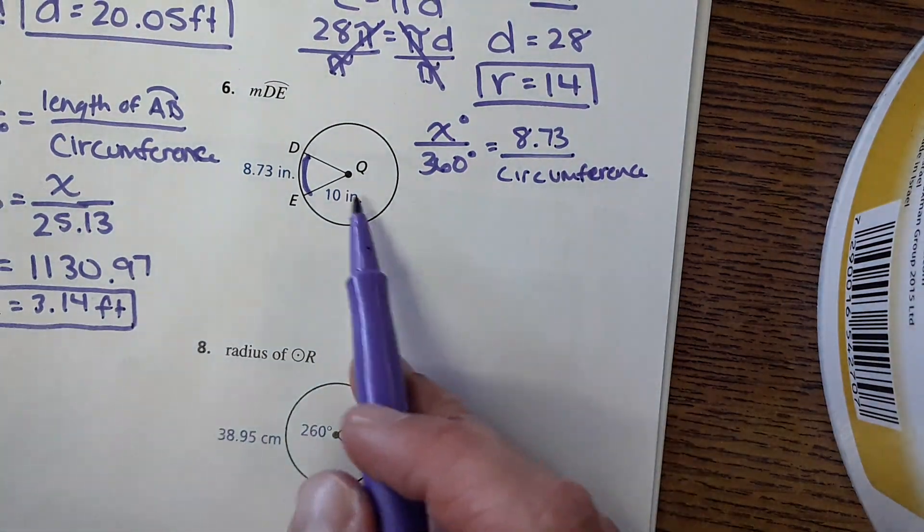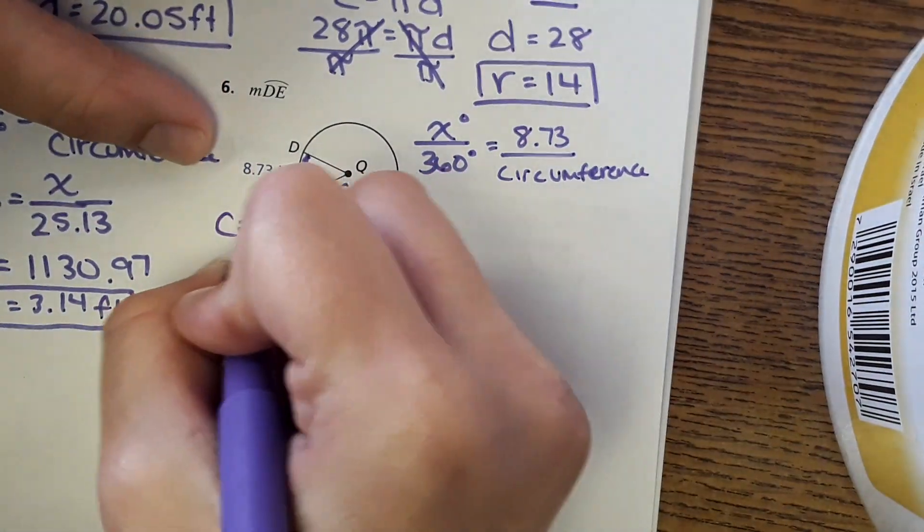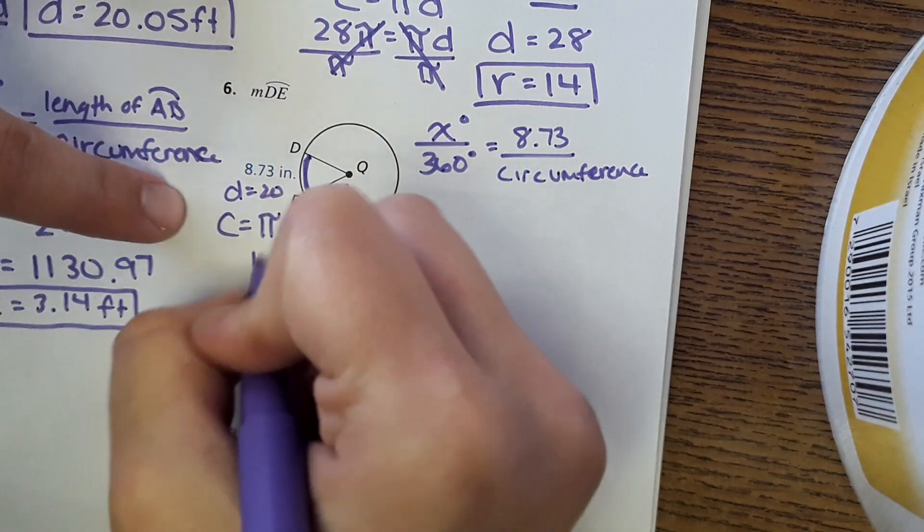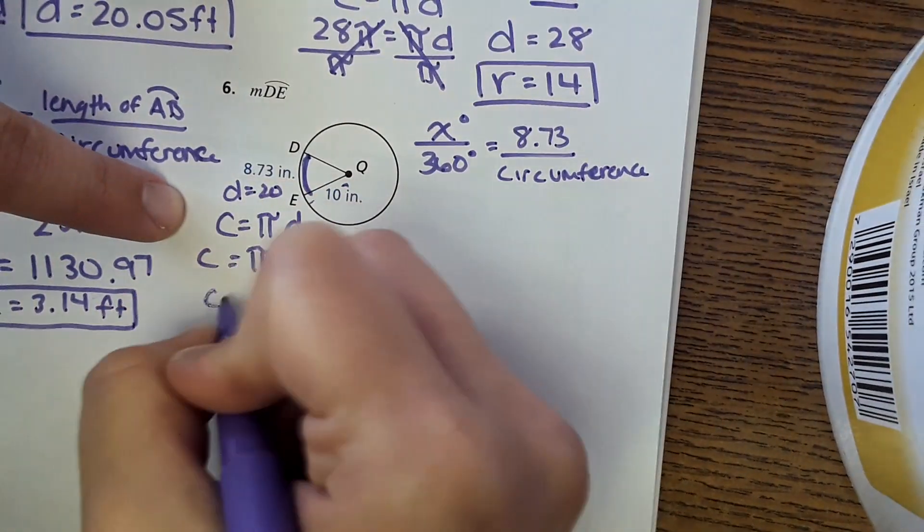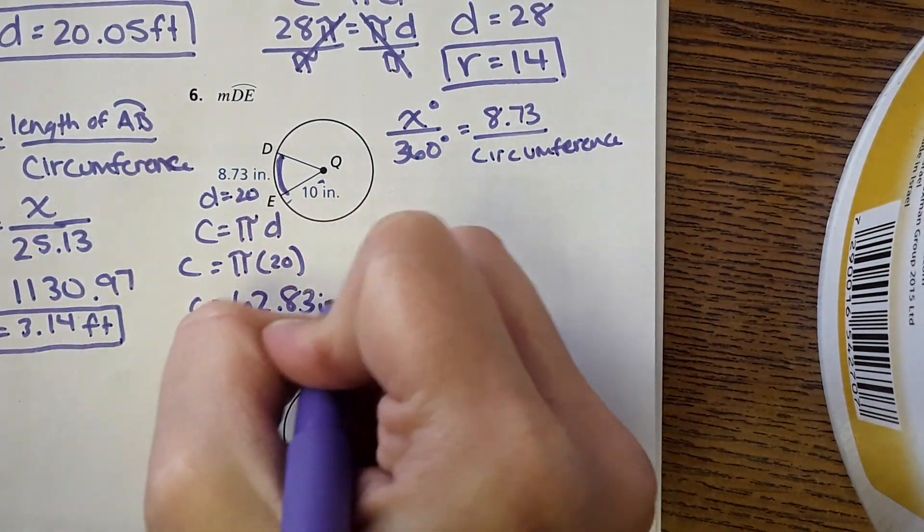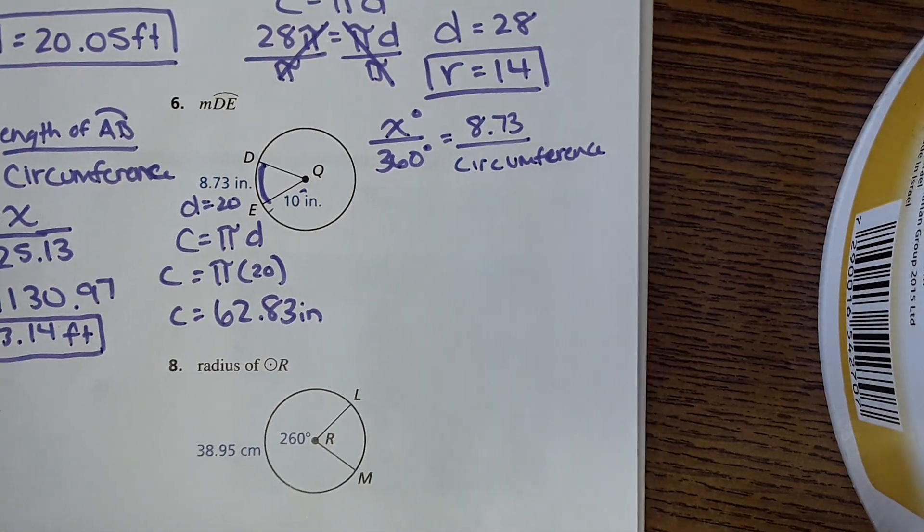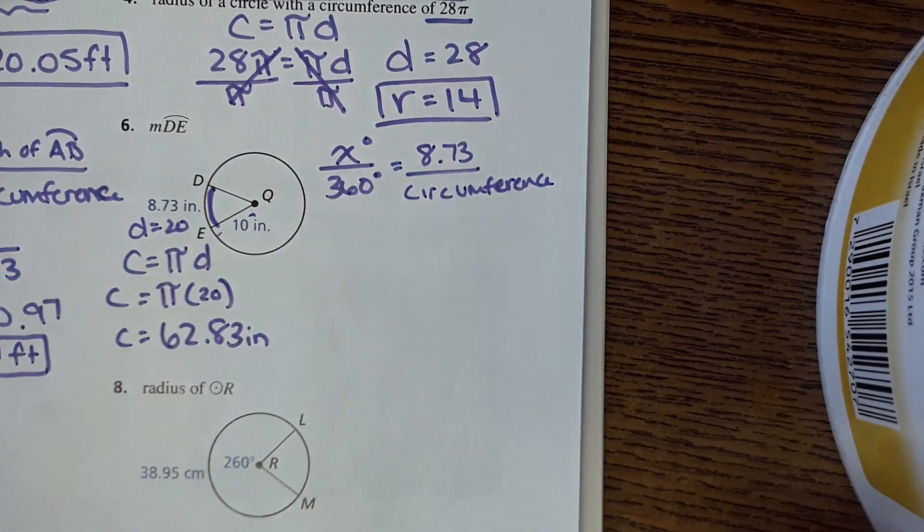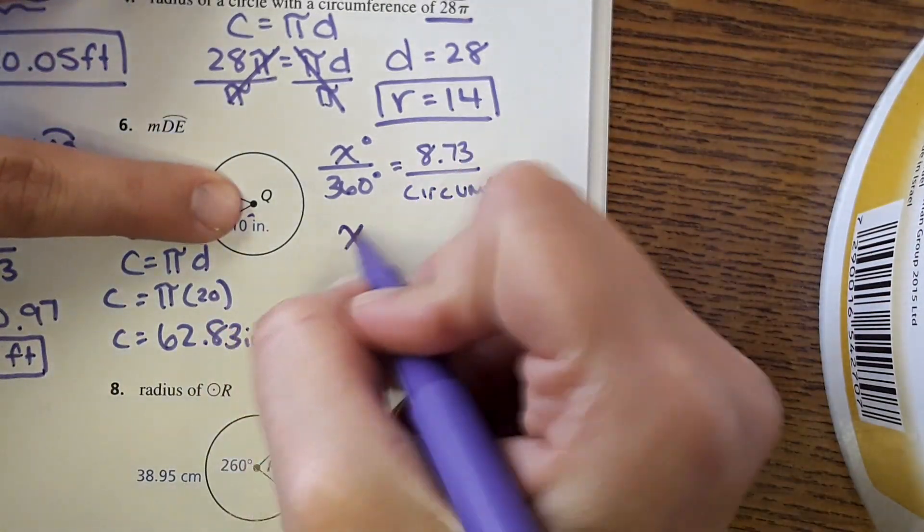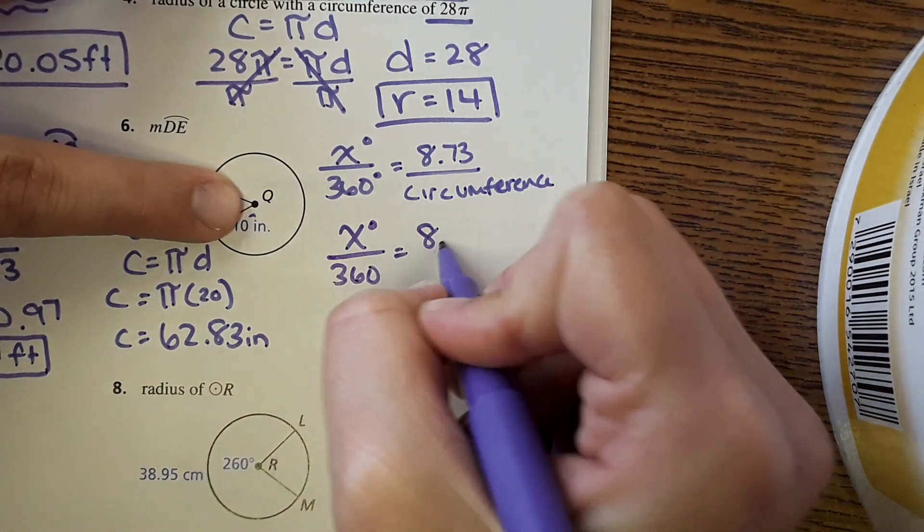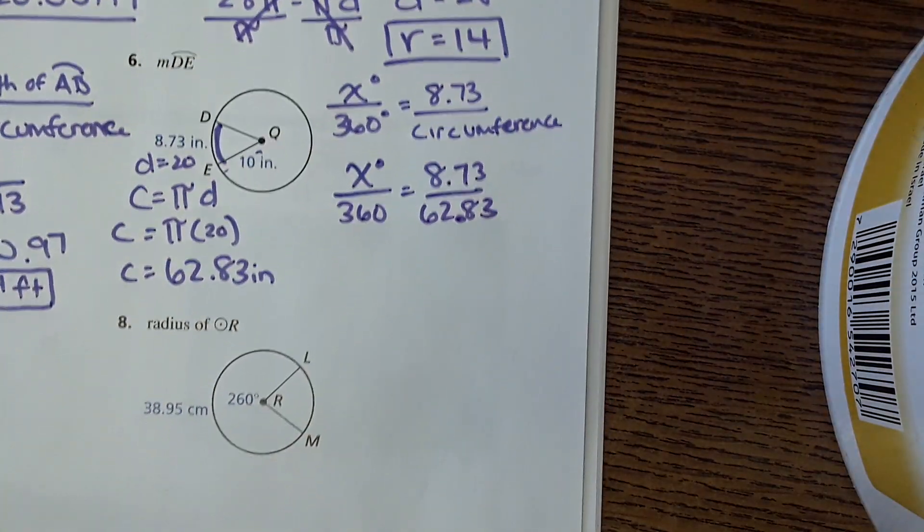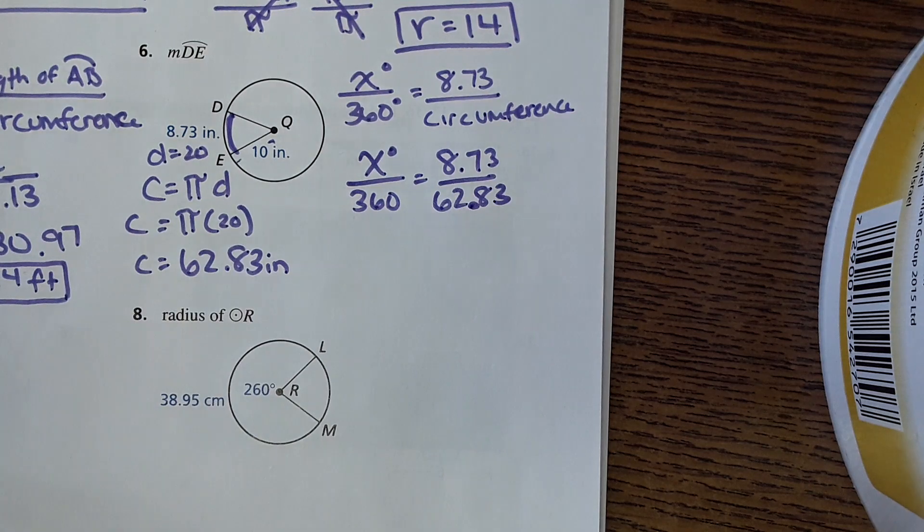So we have to solve for the circumference, they gave us radius. Circumference equals pi times diameter, the radius is 10 so the diameter will be 20. Pi times 20. And then once we have circumference we can plug it into this equation to be x degrees over 360 equals eight point seven three over sixty-two point eight three. And then we can use cross multiplication.